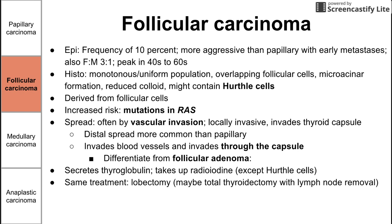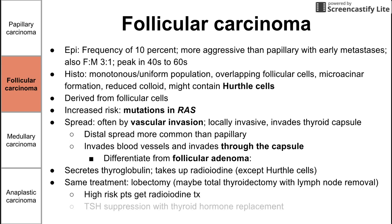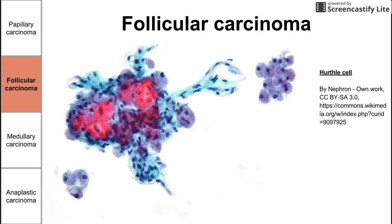Follicular carcinoma also secretes thyroglobulin and takes up radioiodine, as it derives from follicular cells. Treatment is the same: lobectomy, possibly removing the entire thyroid, radioiodine for high-risk patients, and thyroid hormone replacement to suppress TSH. Pictured here is a Hurthle cell, which is characteristic of follicular carcinoma of the thyroid.